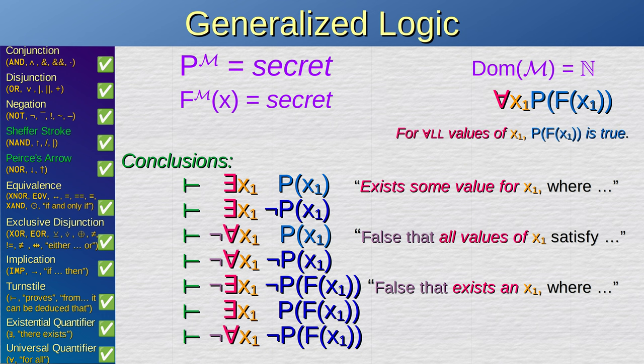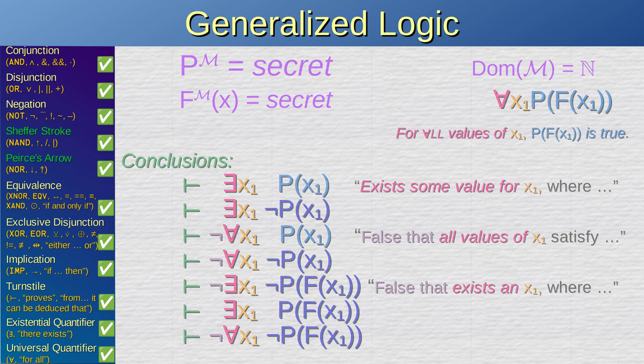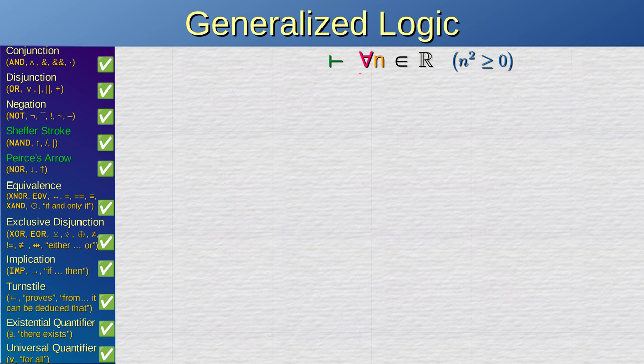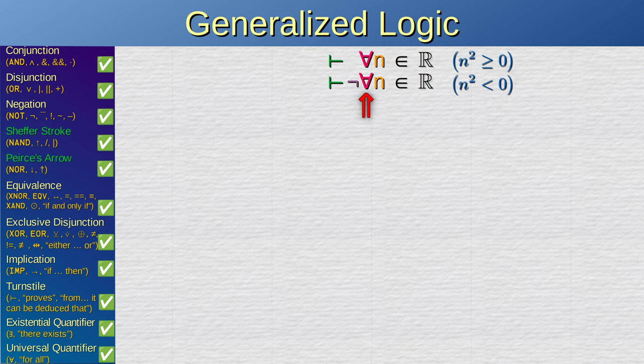That is because we can use these quantifiers with arbitrary mathematical expressions. For example, we can say that for all values of n within real numbers, it is true that n squared is greater or equal than zero. And it is false that for all values of n within real numbers, n squared is less than zero.